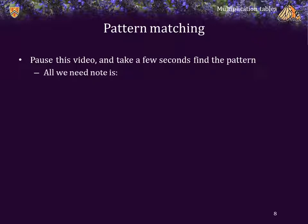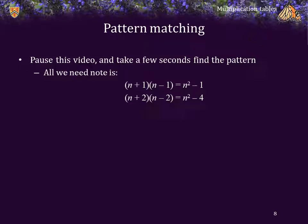Hopefully you're back. All we really need to note is that this is nothing more than a difference of squares. 6 times 8 is 7 squared minus 1. 5 times 9 is 7 squared minus 4. And in general, it's a difference of perfect squares.